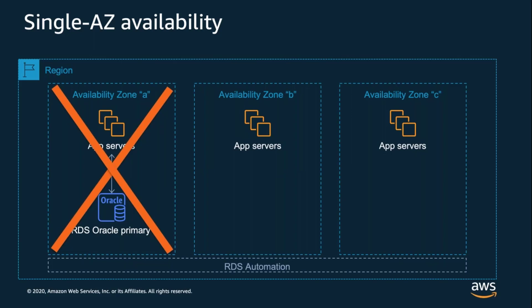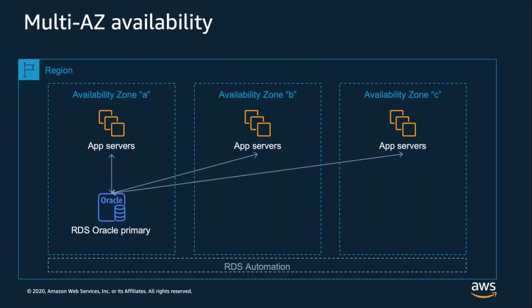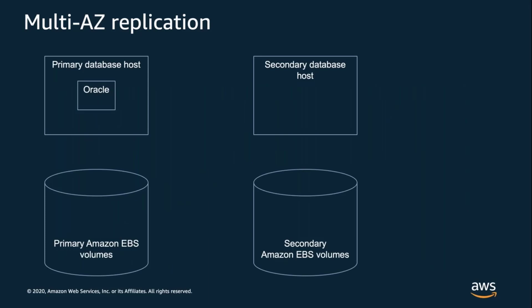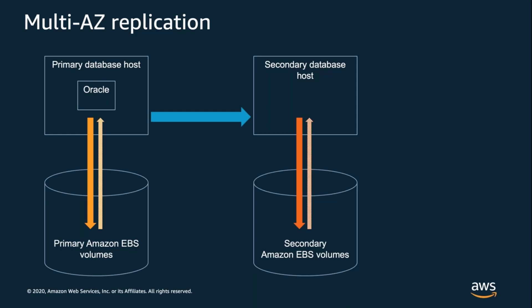If an availability zone itself experiences failure — something that's rare but can happen — and it's the AZ where your instance is running, your application may be unavailable until the problem is solved. For workloads that require a higher degree of availability, RDS multi-AZ creates a secondary instance with the exact same EC2 instance types and EBS volume configuration in another availability zone, then sets up replication maintaining an exact duplicate of your data on the secondary. RDS multi-AZ uses synchronous physical block-level storage replication to ensure the secondary always has an exact replica of the primary data.